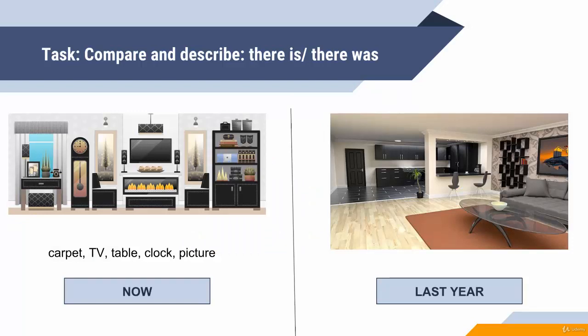Let me first explain the exercises, and after that we are going to do them together in this video. In the first exercise, you need to compare and describe the two rooms. It's one and the same room — the one is now, the other is last year. You need to write down sentences for these five words: carpet, TV, table, clock, and picture.